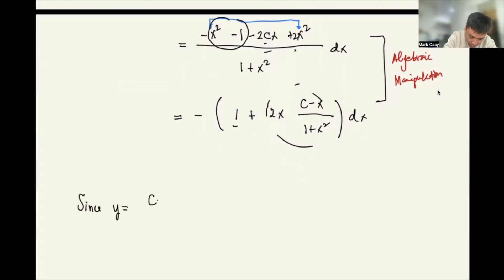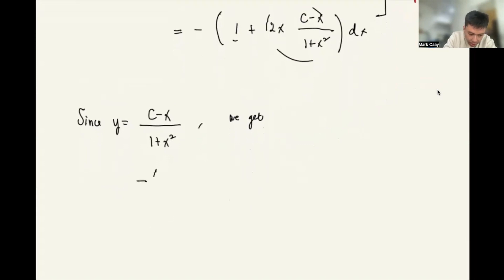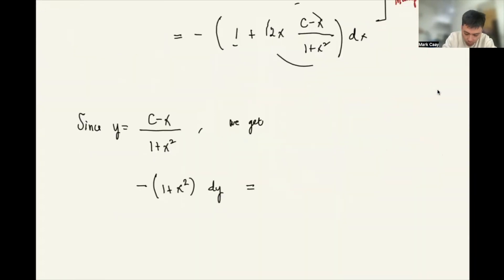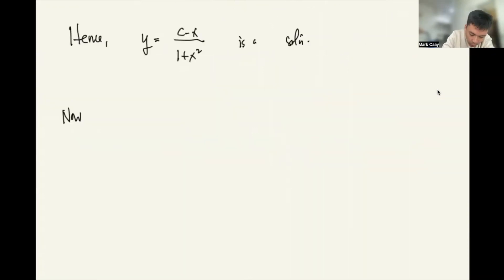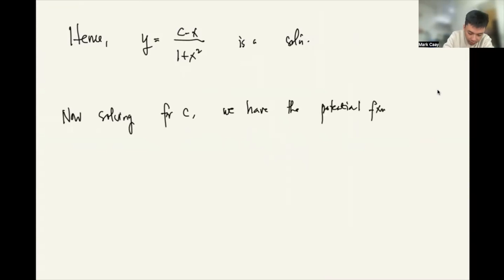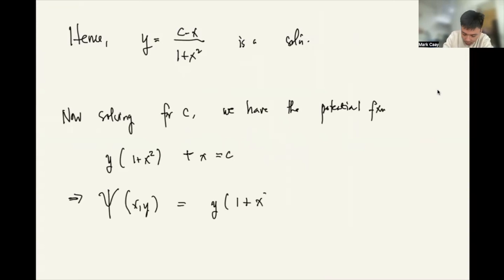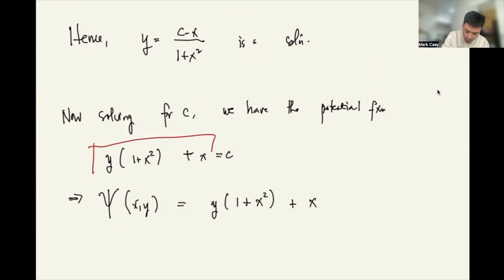Since y = (c - x)/(1 + x²), substituting gives (1 + x²)dy = -(1 + 2xy)dx, which rearranges to (1 + 2xy)dx + (1 + x²)dy = 0. Hence y = (c - x)/(1 + x²) is a solution. Now we solve for c: the potential function is y(1 + x²) + x = c.